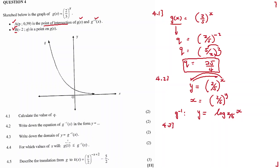4.3 — they're asking for the domain of the inverse function. Did you know? For an inverse function, the domain and range swap. Meaning that the domain of the original function becomes the range of the inverse function, and the range of the original function becomes the domain of the inverse function.